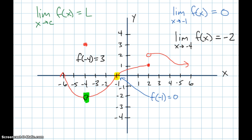Let's do one more: the limit as X approaches two of this function. As X gets closer and closer to two, if I check from the left side, the Y values are getting closer and closer to Y equals one. As X approaches two from the right side, the Y values are getting closer and closer to two. So from one direction I get Y equals one, and from the other direction I get Y equals two.